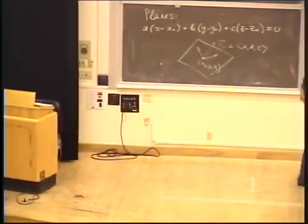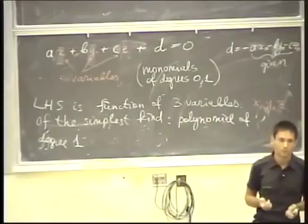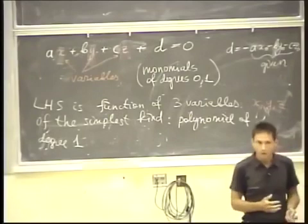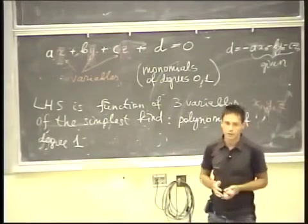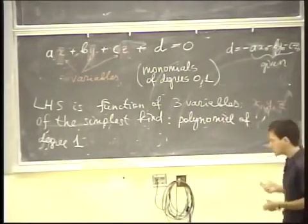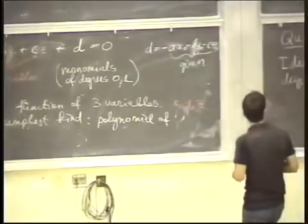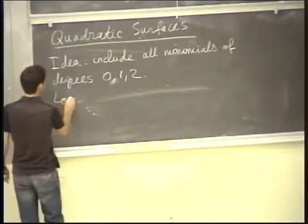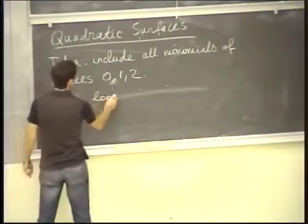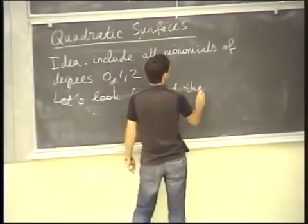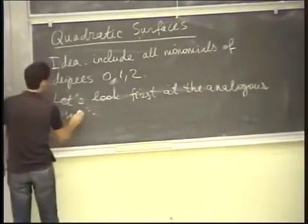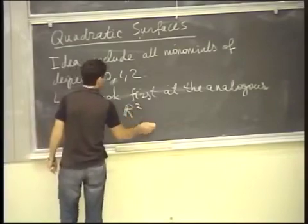Another general idea: when you get a problem in R3, try to do it in R2 or even R1. In other words, if you have a problem in three-dimensional space, look at a baby version of that problem in a smaller dimensional space. This problem is already meaningful in R2, so let's look first at the analogous problem in R2.